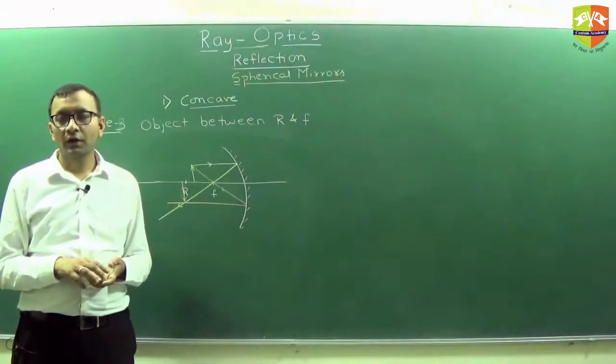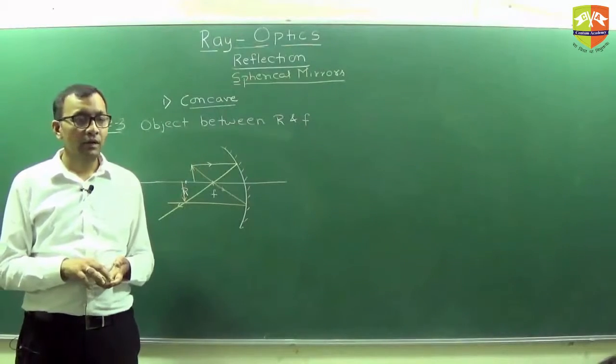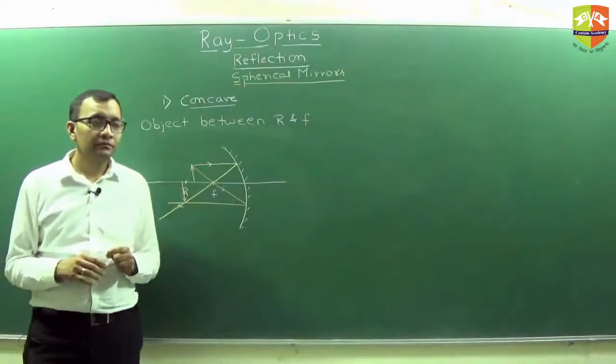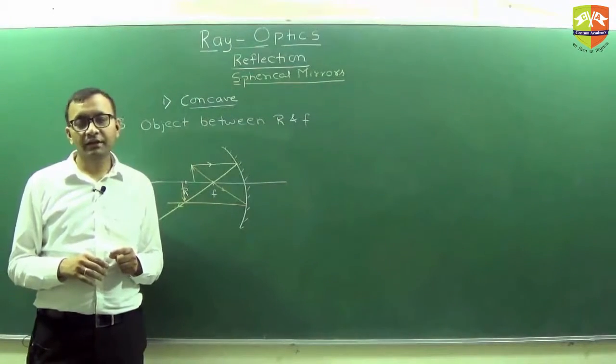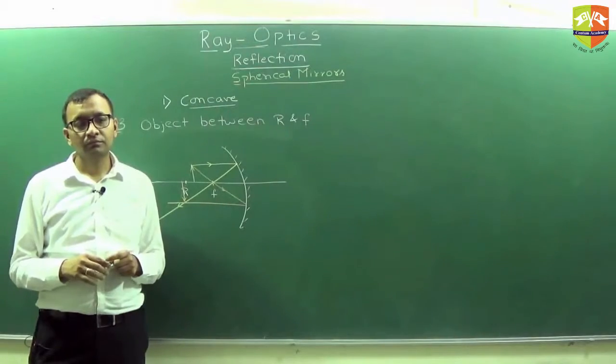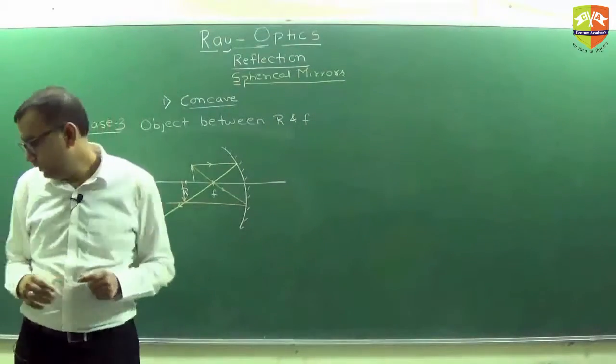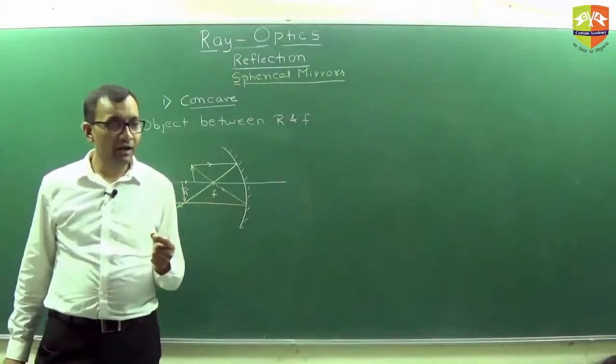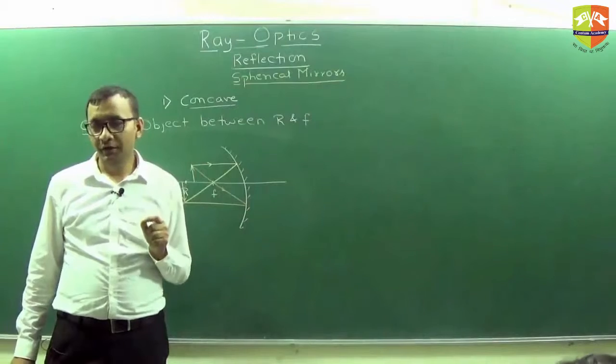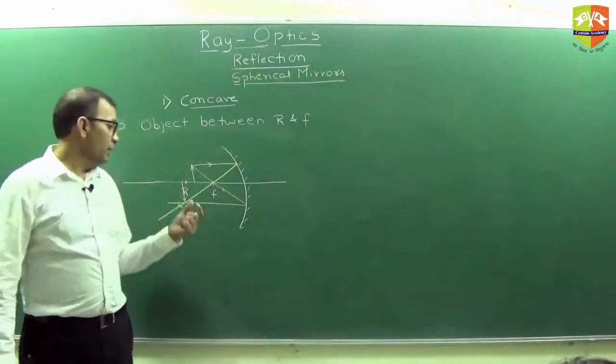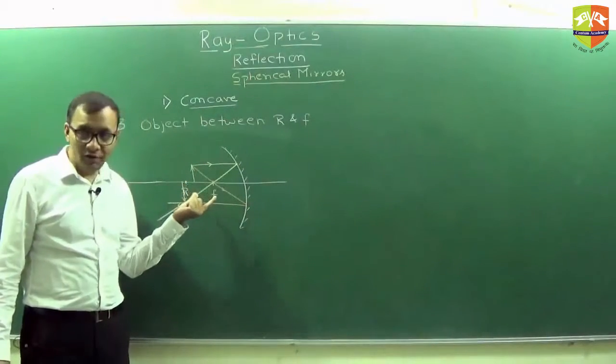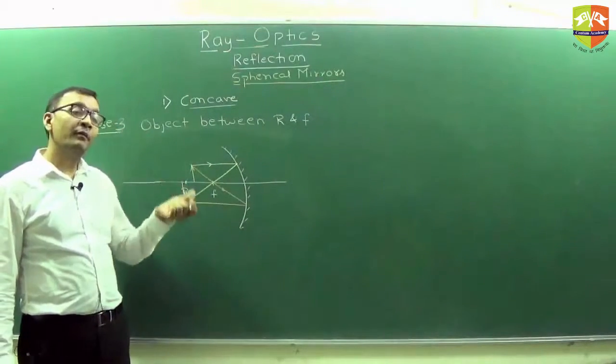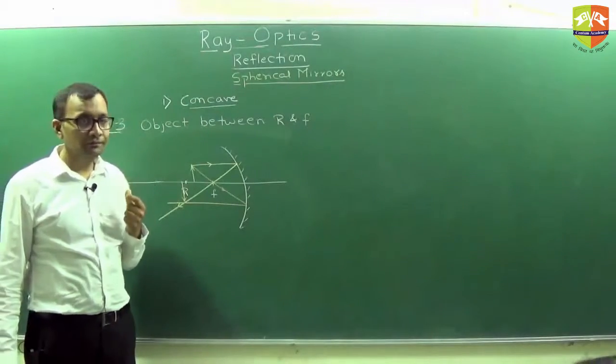Now if you put the object at focus, where will the image be? Any guesses? Let us do that. At infinity. If you put the object at the focus, the image will be at infinity. So now see here, you have moved the object from R to F, the image has moved from R to infinity. So now speed of image is more.